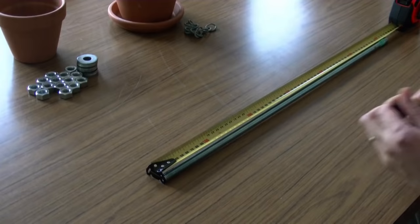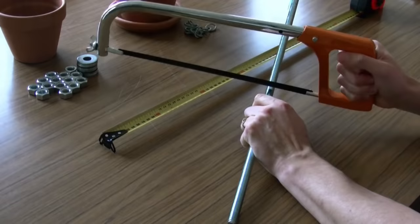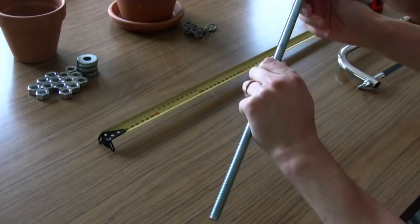The first step to do is to cut the threaded rod. I roughly need 11 inches, so I'll just mark it out with a pen, and then I'll cut it with the hacksaw. This can take a few minutes, so I'll just pause the camera while I go and do this.